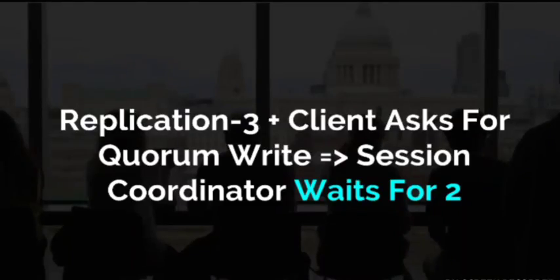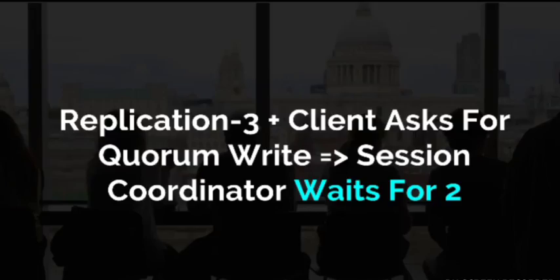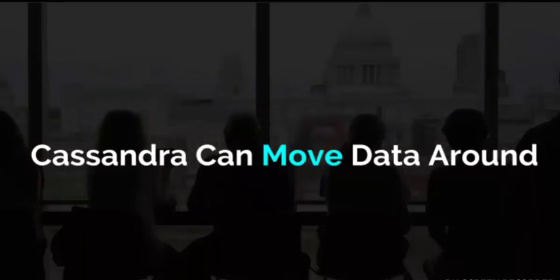What happens if you have a replication factor of three and the client asks for a quorum write? A quorum write means the write does not return to the client immediately — it waits until a quorum agrees the write has happened. With a replication factor of three, the majority is two, so the write returns to you only after two nodes in the replication set have confirmed it. This is reminiscent of the Paxos algorithm.